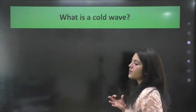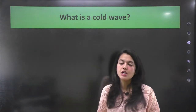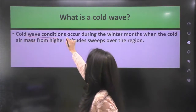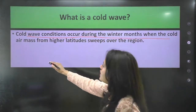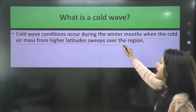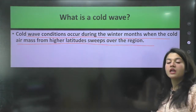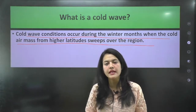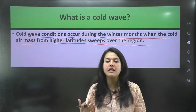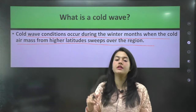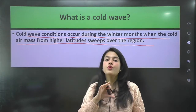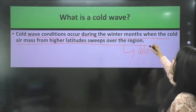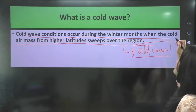So the first question is: what is the cold wave? Cold wave conditions occur during the winter months when a cold air mass from the higher latitudes sweeps over the region. In the hilly areas there are cold winds and cold air masses that traverse across the northern plains, causing the whole region to experience a cold wave.